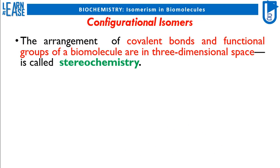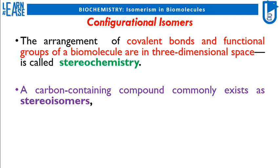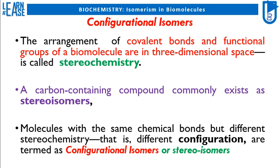The arrangement of covalent bonds and functional groups of a biomolecule in three-dimensional space is called stereochemistry. A carbon-containing compound commonly exists as stereoisomers. Molecules with the same chemical bonds but different stereochemistry — that is, different configuration — are termed configurational isomers or stereoisomers.